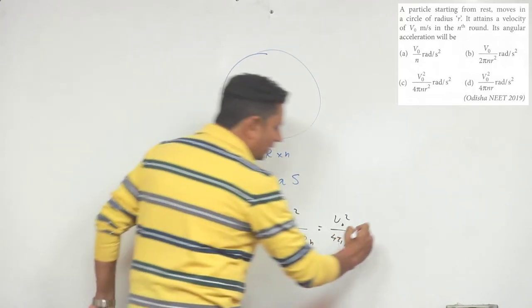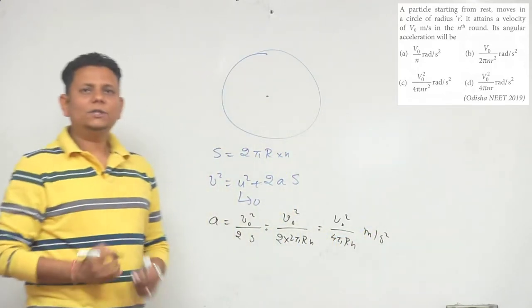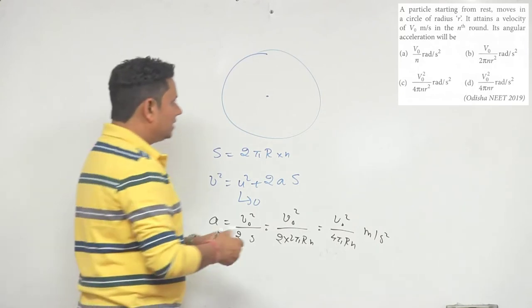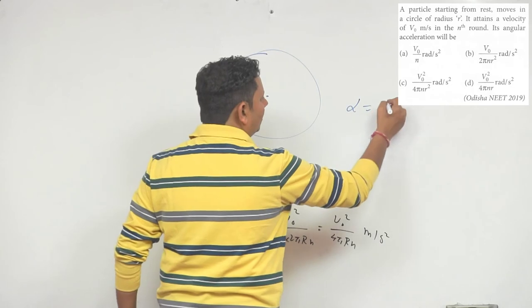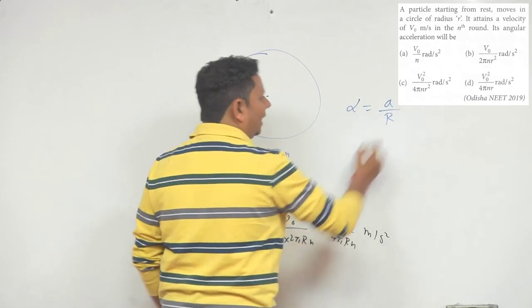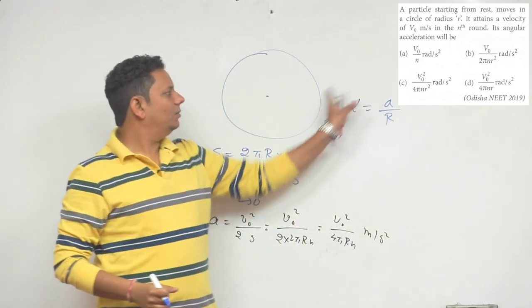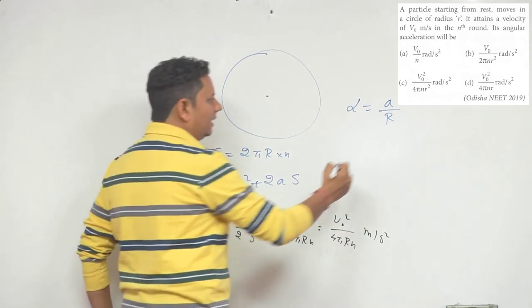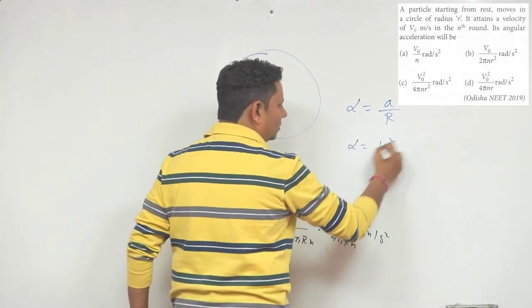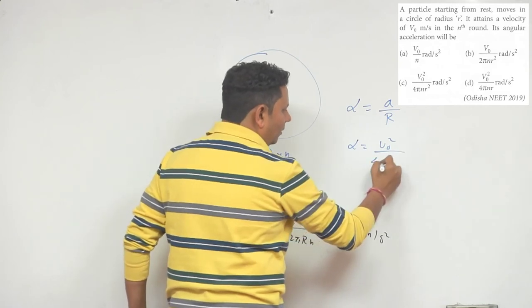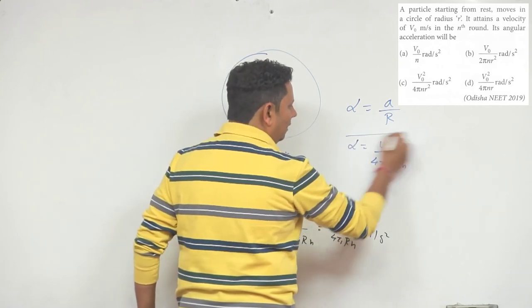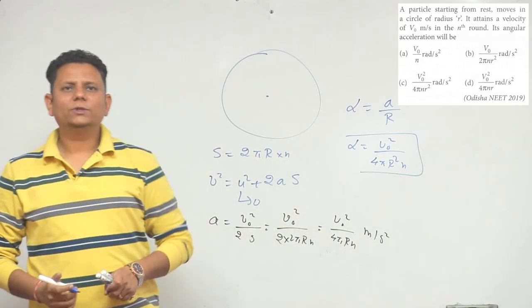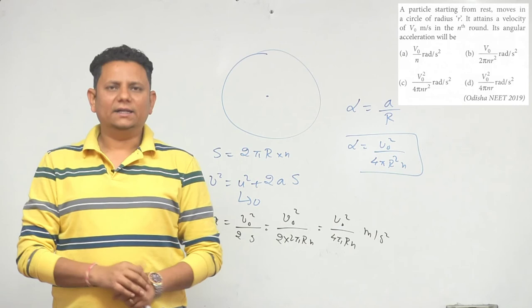Angular acceleration α = a/r. So α will be equal to v0²/(4πr²n) radians per second squared. Hence, option C would be the right answer.